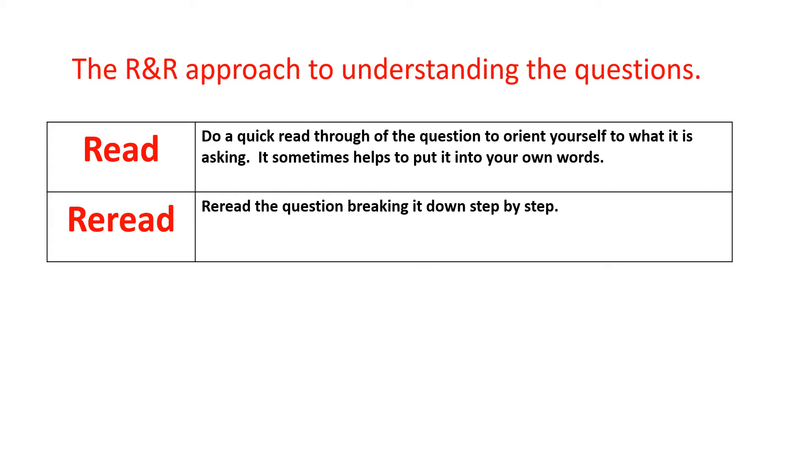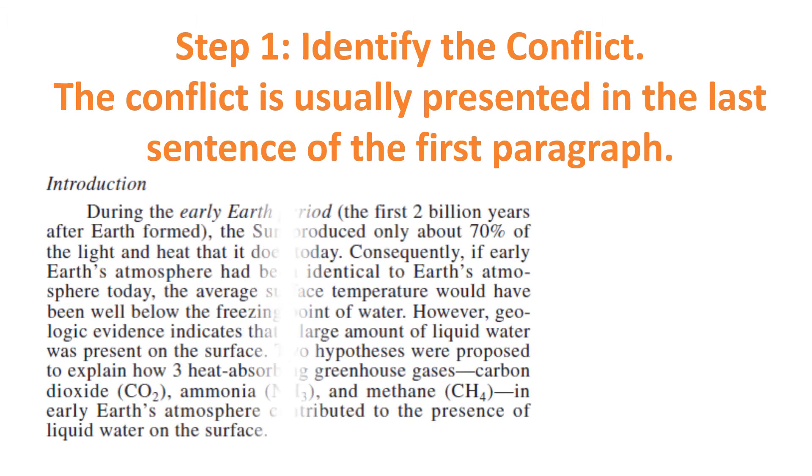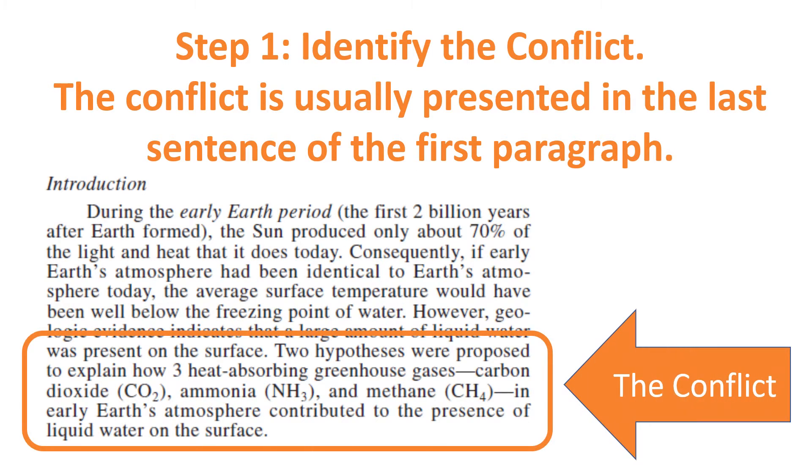Step one is to identify the conflict. The conflict is usually presented in the last sentence of the first paragraph, so if you're going to take any shortcuts you might get shortcut to that. In this particular passage, the conflict is two hypotheses were proposed to explain how three heat-absorbing greenhouse gases in early Earth's atmosphere contributed to the presence of liquid water on the surface.